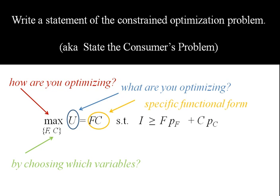Next to the notation for what you're optimizing, you're going to have to have specific functional form, and we were given that Jake's utility is food times clothing.